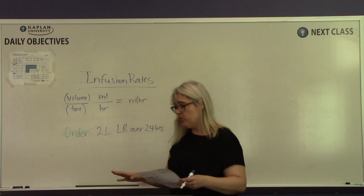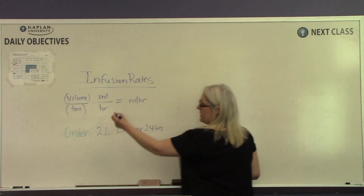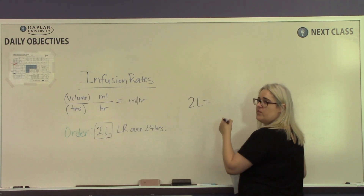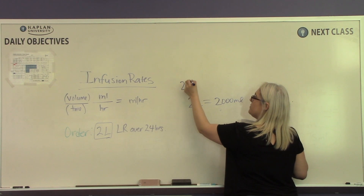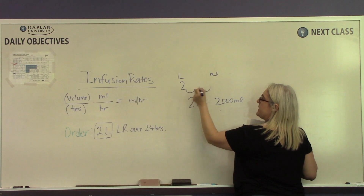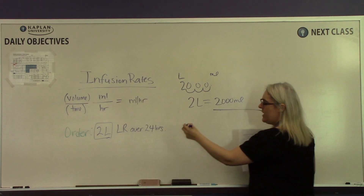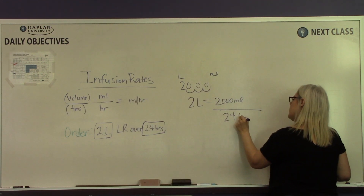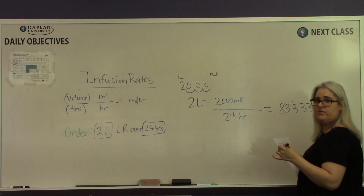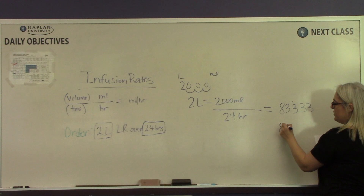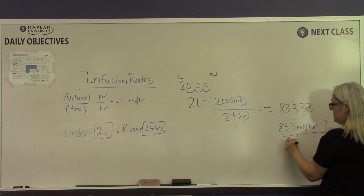Another infusion rate example: the physician orders 2 liters of LR over 24 hours. First, get the volume and convert 2 liters to milliliters by moving the decimal point three places, giving us 2,000 milliliters. Our time is 24 hours. Divide 2,000 by 24 and you get 83.3333. For most infusion questions, round to the tenths position, so your answer is 83.3 milliliters per hour.